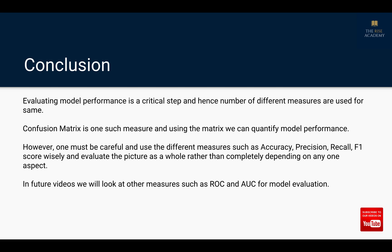In conclusion, evaluating model performance is a critical step and hence a number of different measures are used. Confusion matrix is one such measure, and using the matrix we can quantify model performance. However, one must be careful to use the different measures — such as accuracy, precision, recall, and F1 score — wisely, evaluating the picture as a whole rather than completely depending on any one aspect. In future videos we will look at other measures such as ROC and AUC for model evaluation.